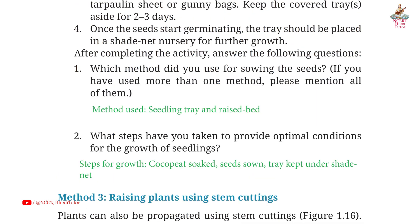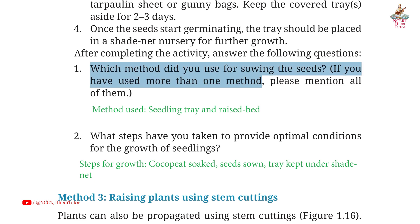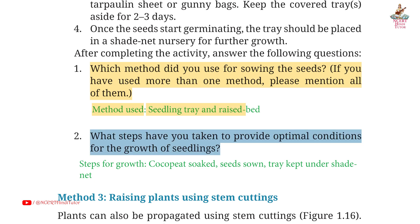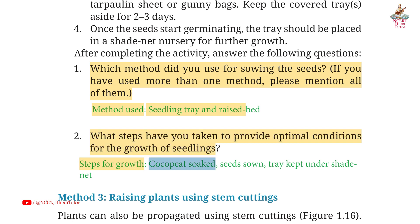Page 19, Question 1: which method did you use for sowing the seeds? Answer: seedling tray and raised bed. Question 2: what steps have you taken to provide optimal conditions for the growth of seedlings? Answer: coco peat soaked, seeds sown, tray kept under shade net.